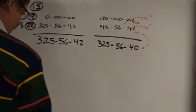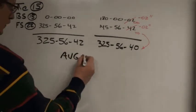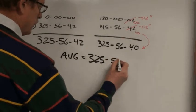So the first face angle is 325-56-42, and the second face angle is 325-56-40. The average will be 325-56-41.